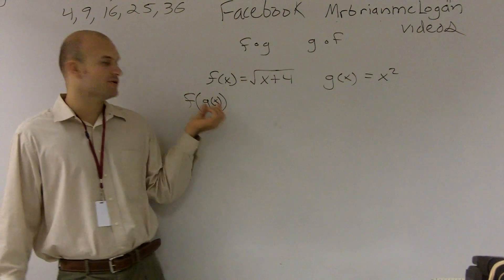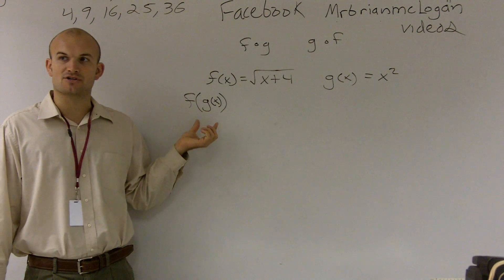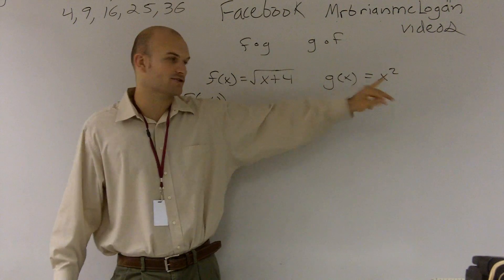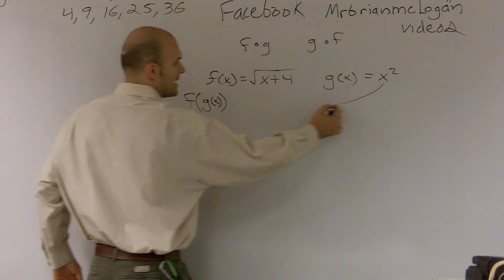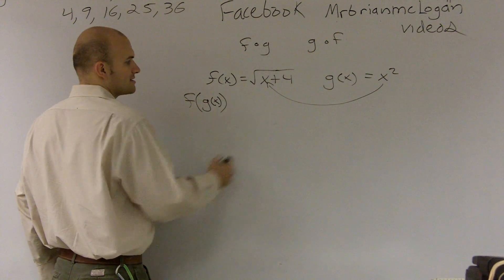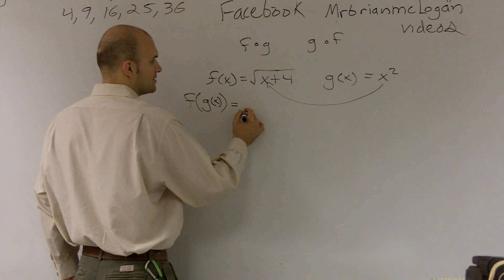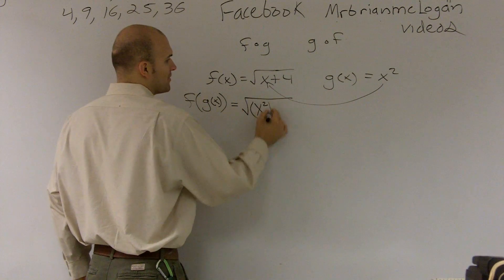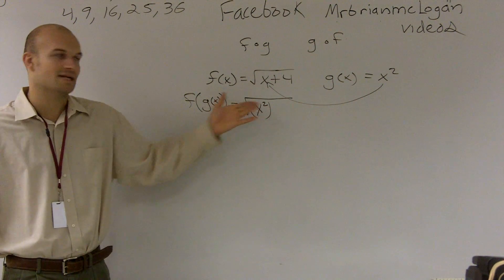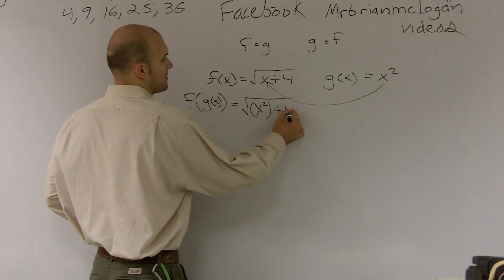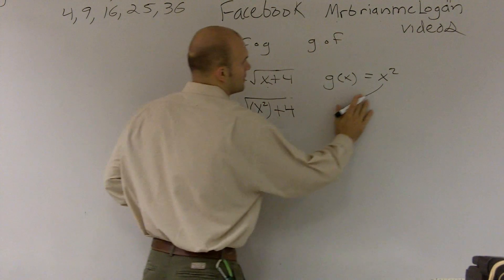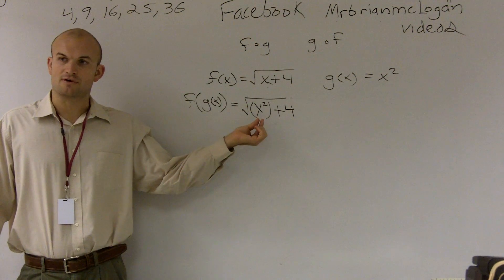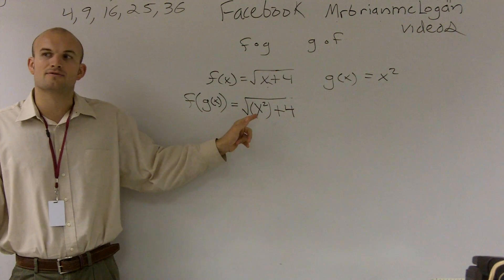So I'm going to evaluate my f of x function for g of x. I look at g of x, and I say g of x is x squared. So I'm going to plug in x squared in for x. This looks like square root of x squared, and I'm going to put it in parentheses to represent that's what I'm plugging in, plus 4. So when you're doing f of g of x, all you're doing is you're taking your g of x function and plugging it into the other function.